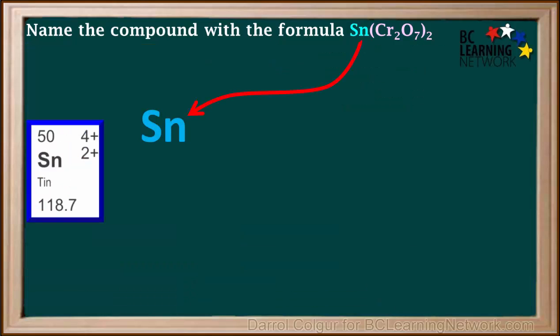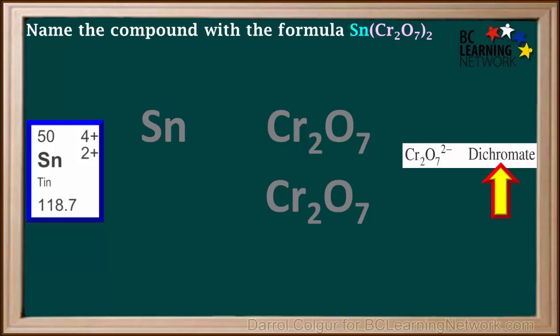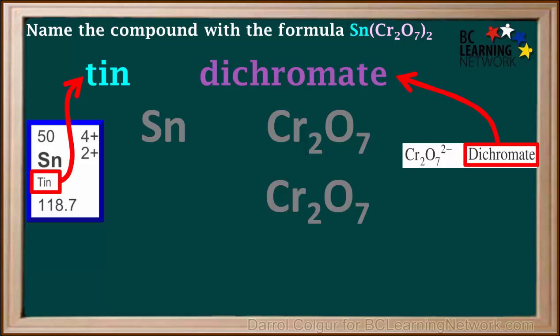The formula tells us we have one tin ion and two Cr2O7 ions. The ion table tells us that the Cr2O7 is called dichromate. So we can start the name by writing tin dichromate.